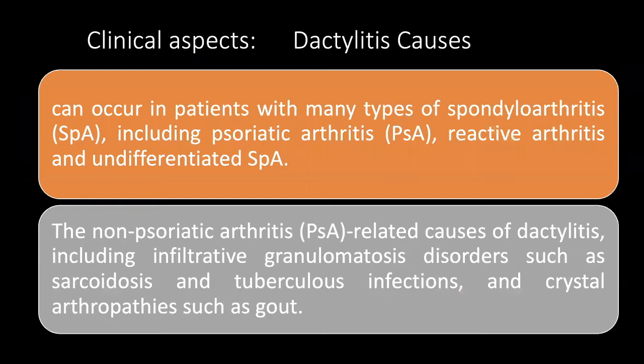As regards the causes of dactylitis, it mainly occurs with spondyloarthropathies in general, including psoriatic arthritis, which is the most common cause, but also other forms such as reactive arthritis and undifferentiated spondyloarthropathy. Non-autoimmune causes include infiltrative granulomatous disorders like sarcoidosis and TB, infections, and crystal arthropathy — especially gout, which can also cause diffuse dactylitis of the whole digit.